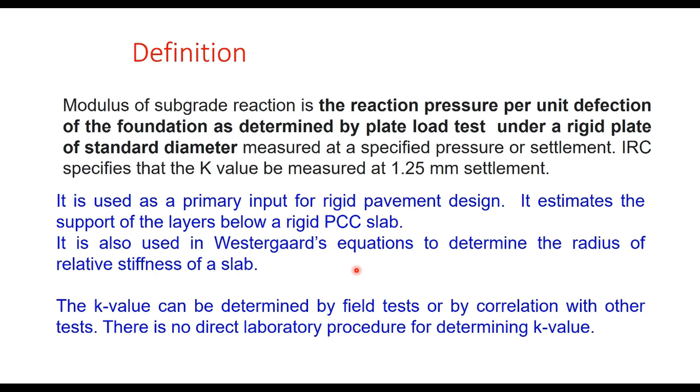The test uses a rigid plate of standard diameter measured at a specified pressure or settlement. IRC specifies that the k value should be measured at 1.25 millimeter settlement, so we note down the pressure at which the plate will yield a settlement of 1.25 millimeter.